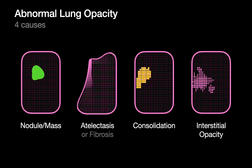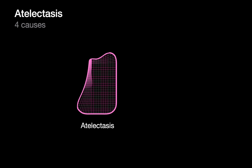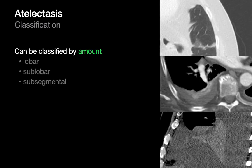As you remember in our introduction talk, there are four basic reasons that can be the cause of an abnormal opacity in the lung. The reason we're going to focus on in this talk is atelectasis. Atelectasis can be classified in different ways — sometimes according to the amount of tissue involved, like lobar or subsegmental atelectasis, referring to how much of the lung is atelecticized.